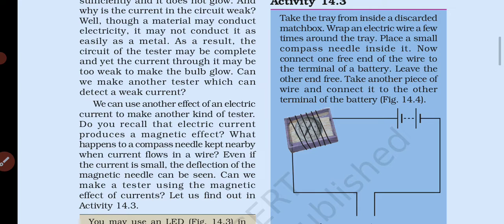What happens to a compass needle kept nearby when current flows in a wire? Electric current magnetic effect produce करता है, जिसकी वजह से magnetic needle deflect होती है। Electric current दो तरह के effects करता है: पहला heating effect, दूसरा magnetic effect। जब भी magnetic compass को electricity के wire के पास लाते हैं, magnetic needle लगातार घूमती रहेगी और सही direction नहीं बता पाएगी।